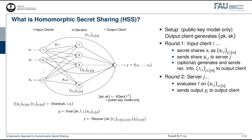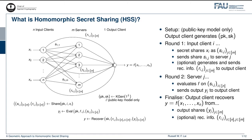The input client could also generate some recovery information Rij and send them to the output client. Then, in round two, each server J would evaluate the function F on its shares, and send the resulting output share Y to the output client. Finally, the output client can recover the computation result Y equals F of X1 up to Xn, using the output shares Y sent from the servers, and also optionally the recovery information Rij sent by the input clients.